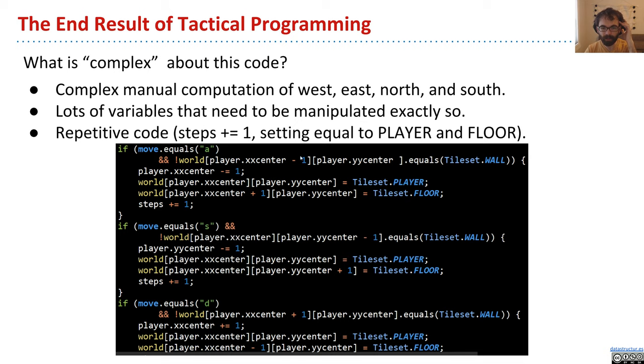I mean, if you think about it for a little while, you could say, okay, minus one, that must be west, and so forth. But just reading this code, I find it hard to read.